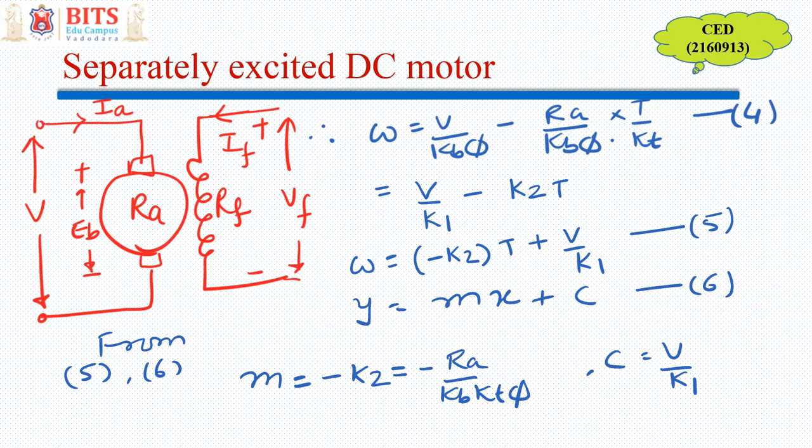For a separately excited DC motor, RA is generally very small, so the slope is going to be very small, and C equals V/K1. So the intercept is directly proportional to the applied voltage V.